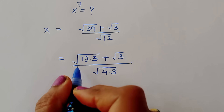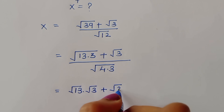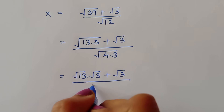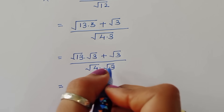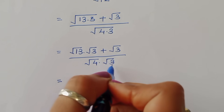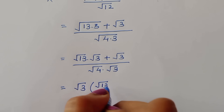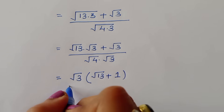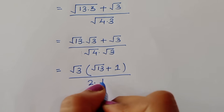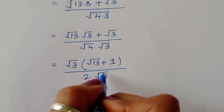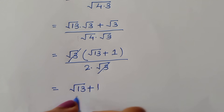We can write x = (√13 · √3 + √3) / (√4 · √3). Taking √3 common from numerator and denominator, we get √3(√13 + 1) / (√4 · √3). The √3 cancels, leaving (√13 + 1) / 2, since √4 = 2.